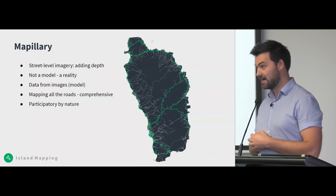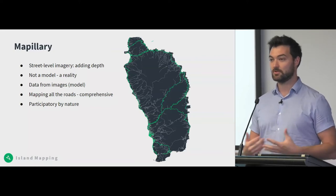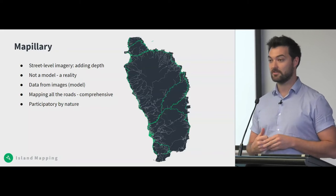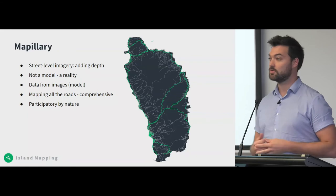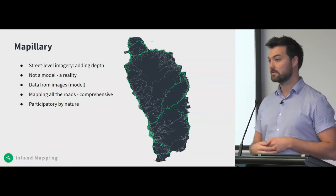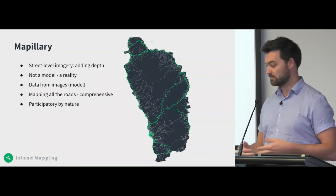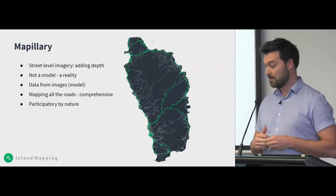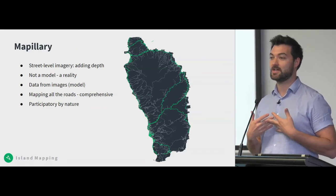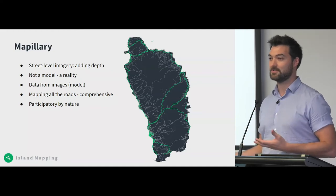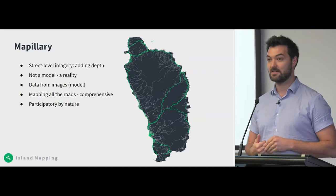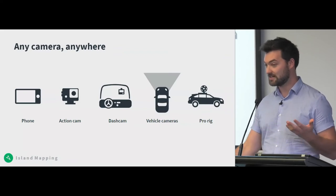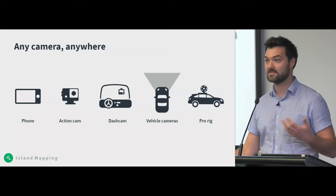A little about Mapillary: Mapillary is a platform that allows you to upload images and create street-level imagery. It's not a model in the way that many maps are, but rather it gives a snapshot of reality on the ground. We take the images you upload and extract data from them — things like traffic signs, road assets, crosswalks, benches. Making Mapillary work well involves mapping all the roads comprehensively. It's participatory by nature — we need someone out there on the roads, on the trails, on the beaches, snapping photos. It works with any camera anywhere, from phones to action cameras all the way up to 360 cameras on a vehicle.